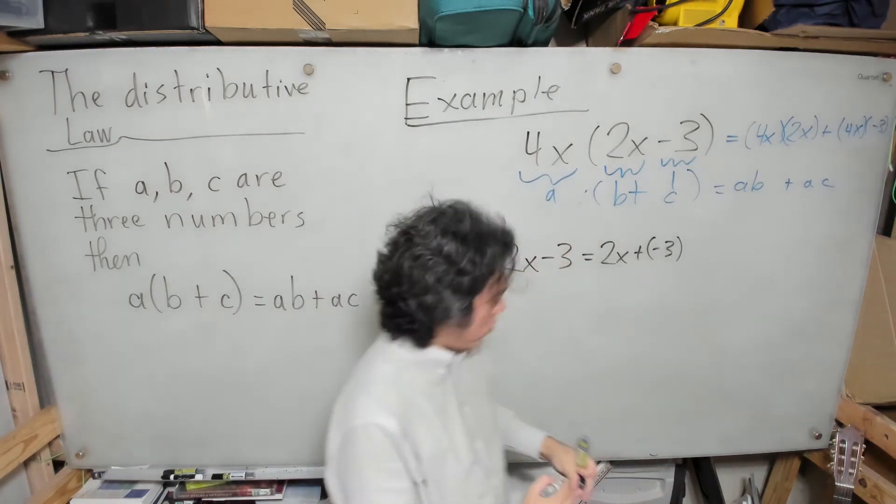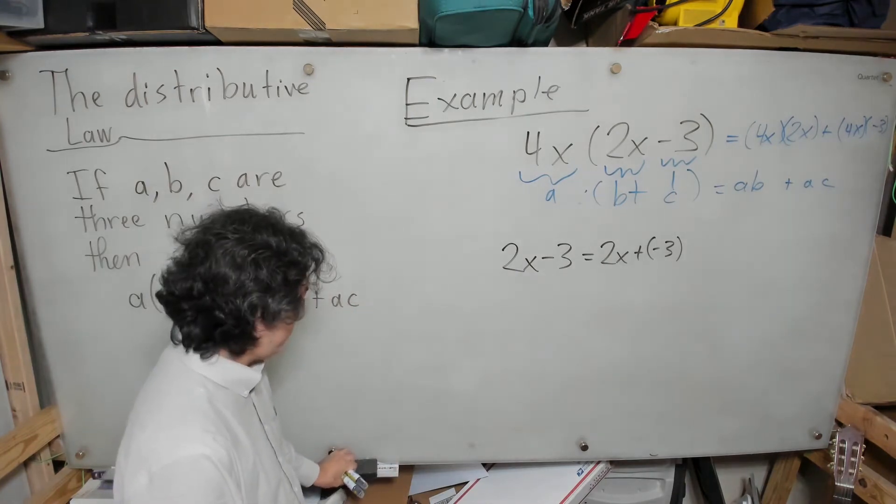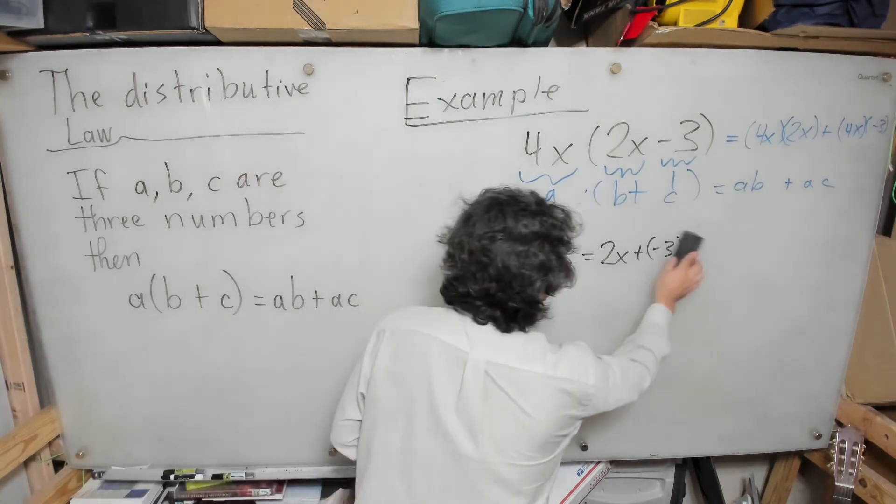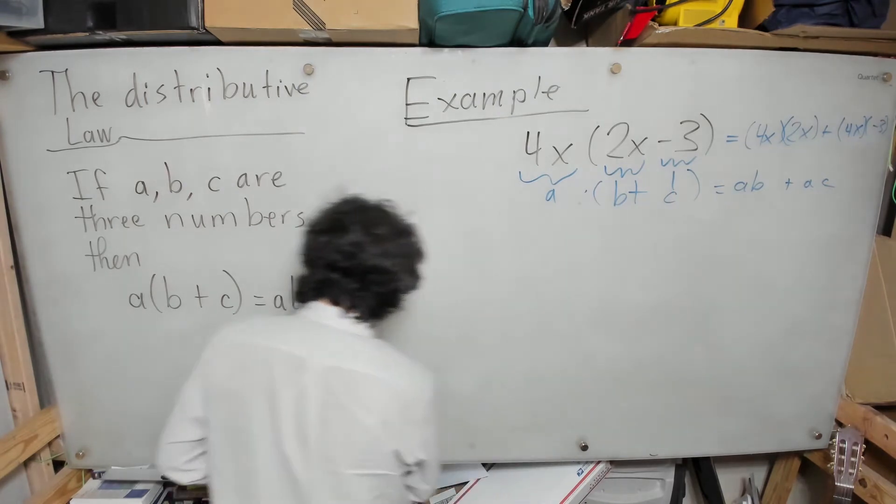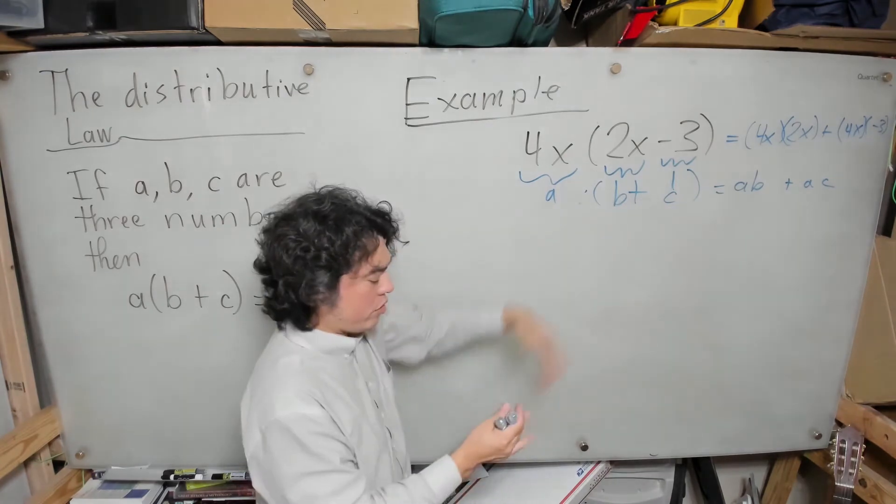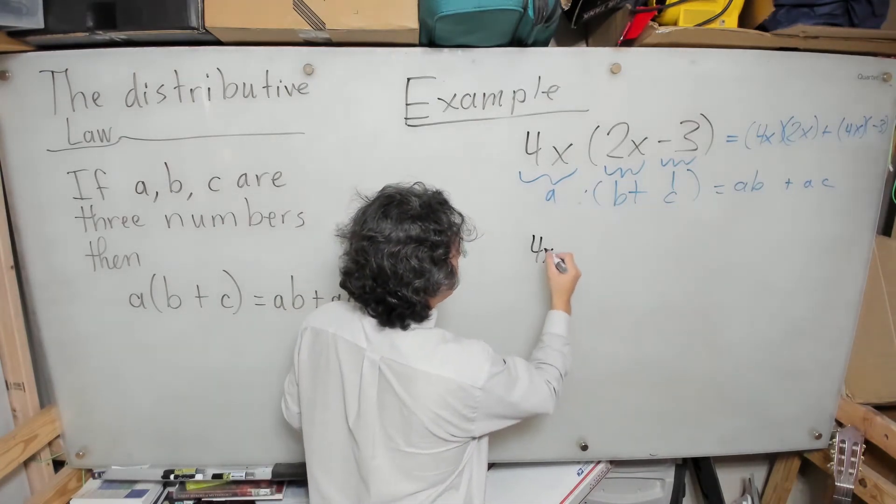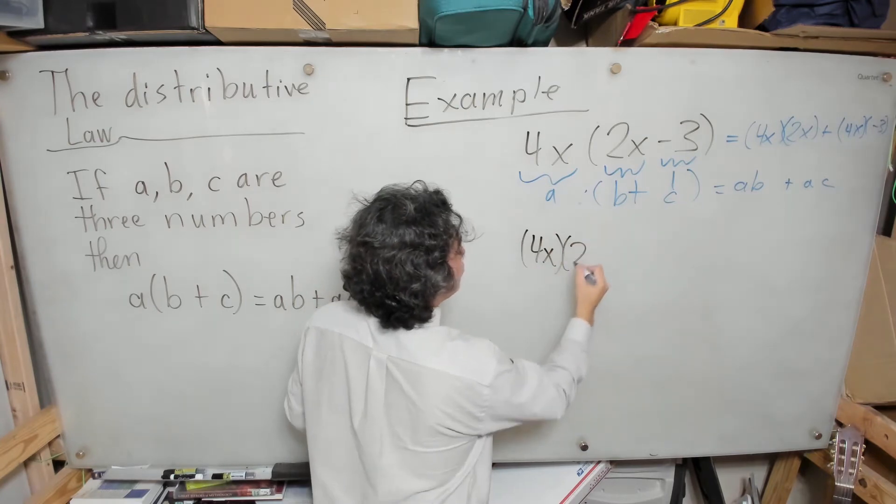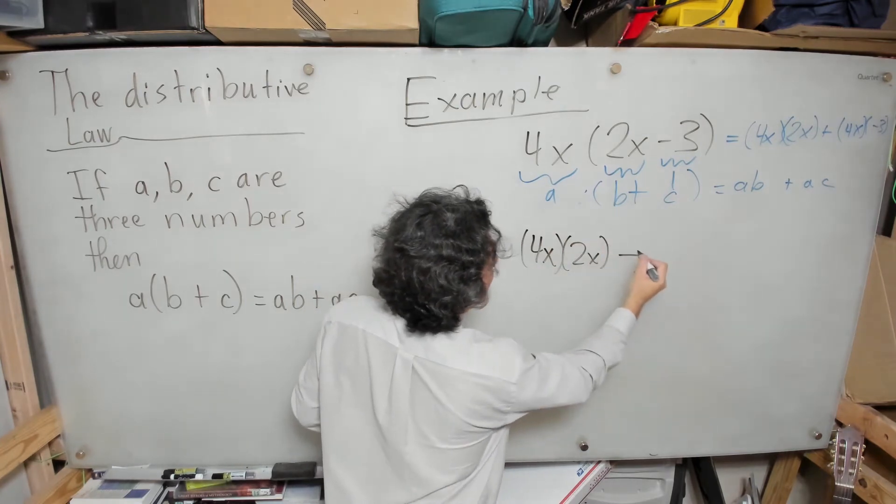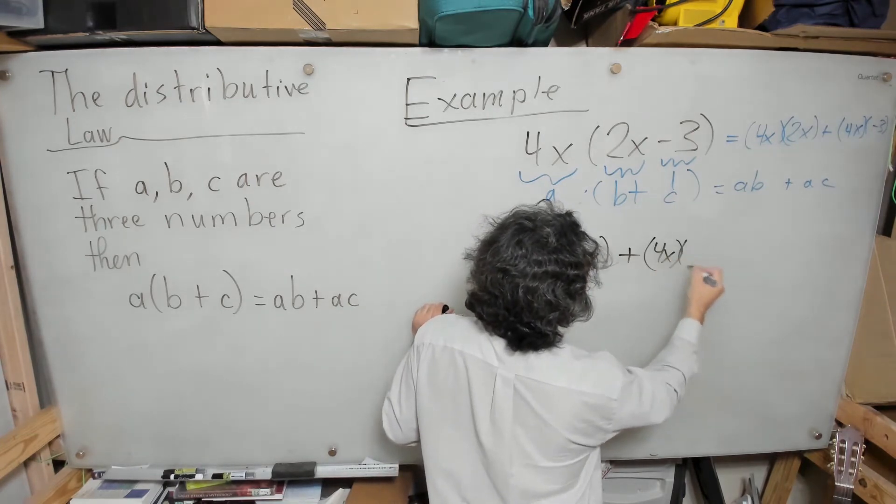Let us continue now. I'm going to bring down this right-hand side to analyze it further. So, 4x times 2x plus 4x times negative 3.